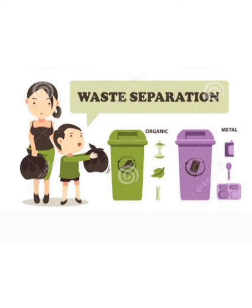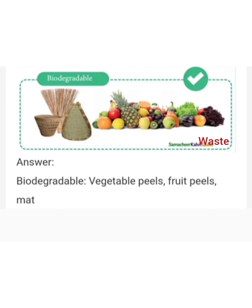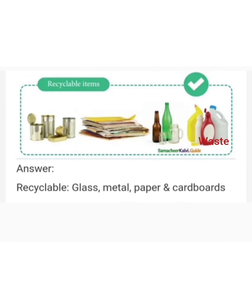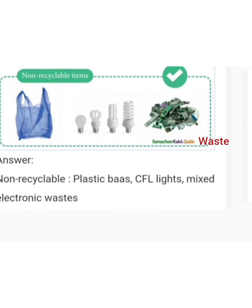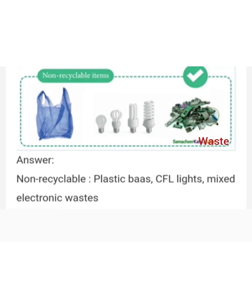Next one: waste separation. Waste at home should be separated into biodegradable, recyclable and non-recyclable categories. Biodegradable waste such as leftover food and vegetable waste can be broken down naturally to create compost. Recyclable waste such as paper, glass and metal can be made into new useful products. Non-recyclable waste should be kept separate and will be sent to an open dump and landfill.